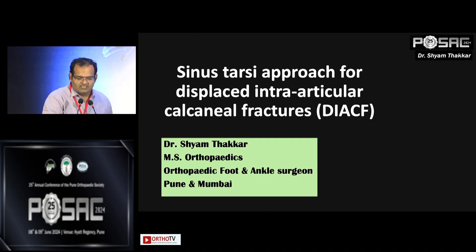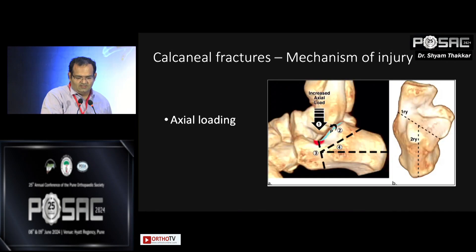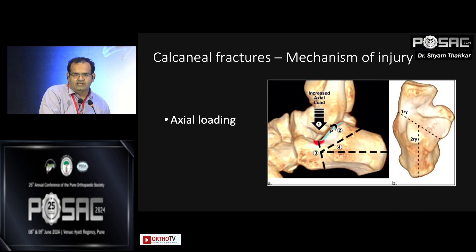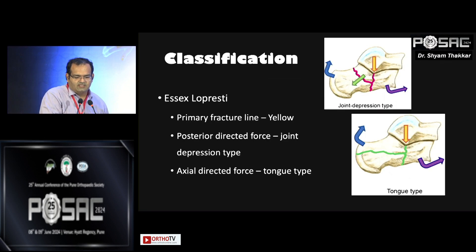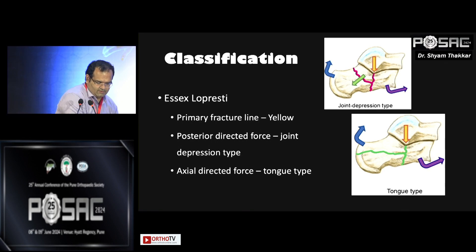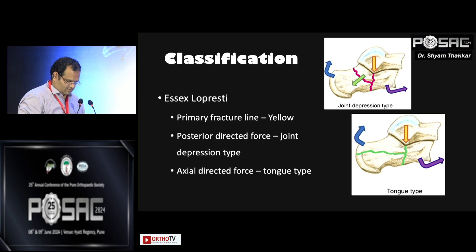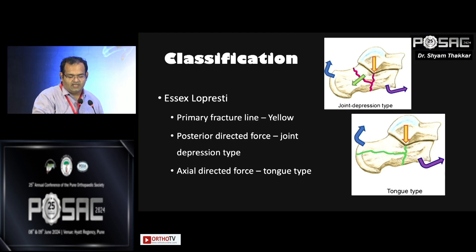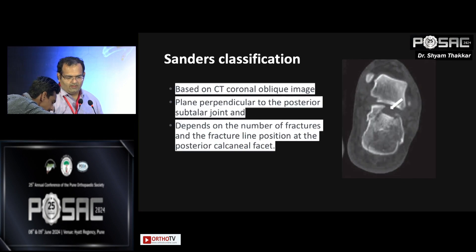We will talk about displaced calcaneal fractures — one of the difficult fractures to treat and quite often neglected and conserved. The main mechanism of injury is axial loading. If the axial loading is a posteriorly directed force, it results in the joint depressed type. If it is an axially directed force, it is the tongue type.